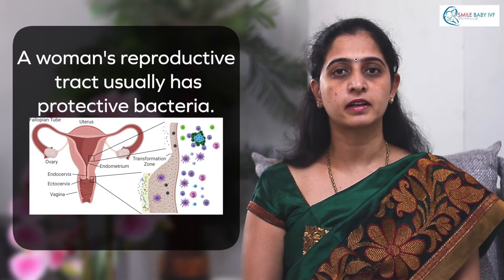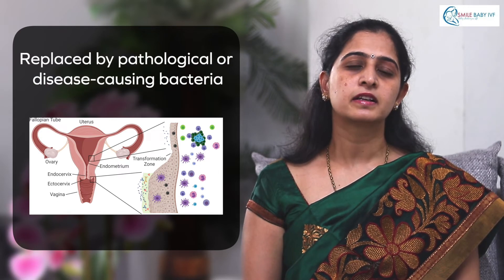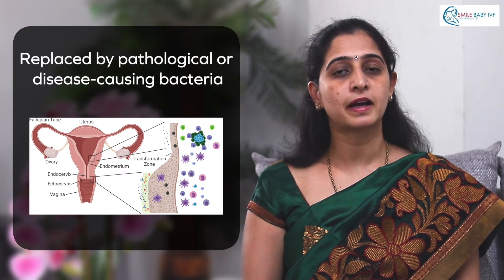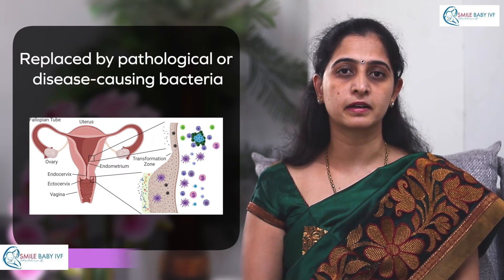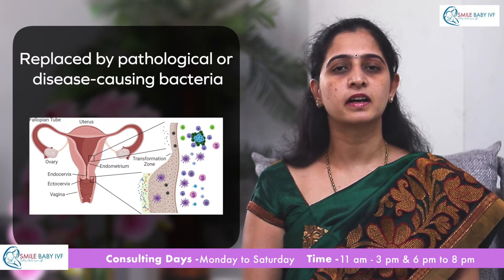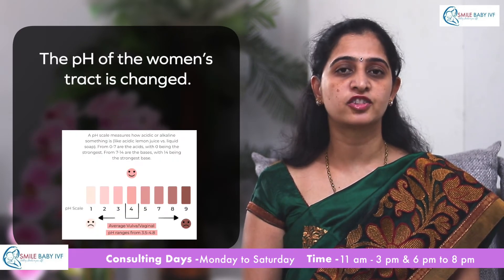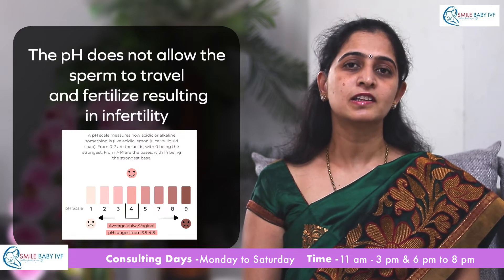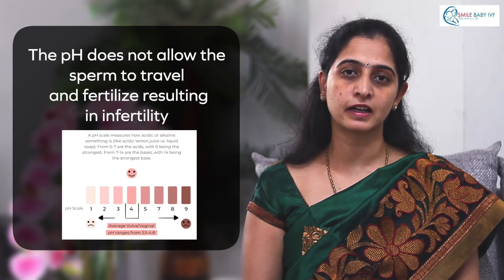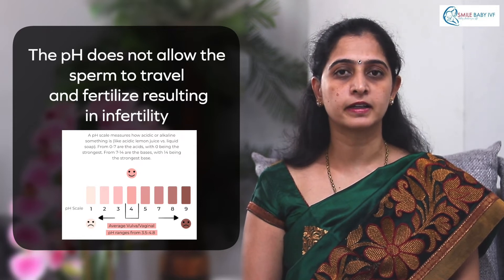Women's reproductive tract usually has protective bacteria. These bacteria may be replaced by pathological or disease-causing bacteria. When these bacteria are replaced, the pH of the women's tract is changed, and this pH does not allow the sperm to travel and fertilize the egg — this in turn results in infertility.